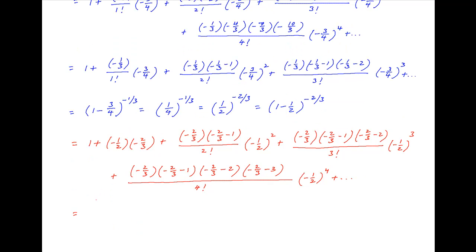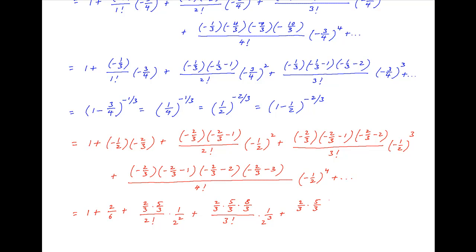This simplifies to 1 plus 2/6, plus (2/3)(5/3) divided by 2 factorial times (1/2) squared, plus (2/3)(5/3)(8/3) divided by 3 factorial times (1/2) cubed, plus (2/3)(5/3)(8/3)(11/3) divided by 4 factorial times (1/2) to the power 4, plus and so on.